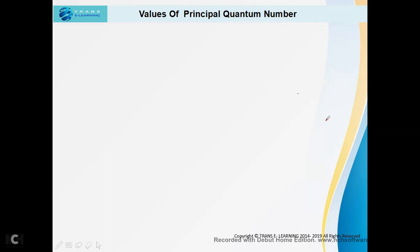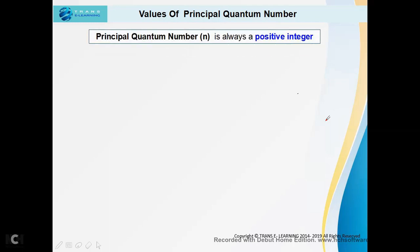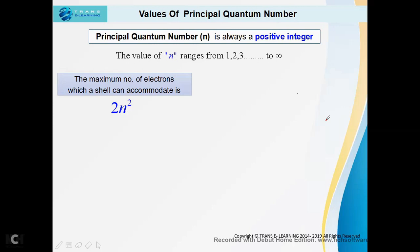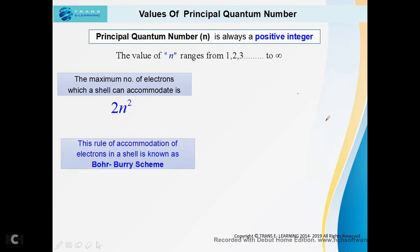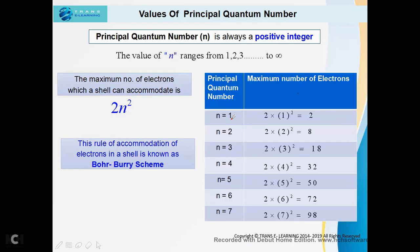The principal quantum number is always a positive integer — it is never negative. The value of n ranges from 1 to infinity. The maximum number of electrons which a shell or energy level can accommodate is given by 2n². This rule of accommodation of electrons in a shell is known as the Bohr-Bury scheme. The first shell can accommodate a maximum of 2 electrons, the second shell 8 electrons, the third shell 18 electrons, and so on.